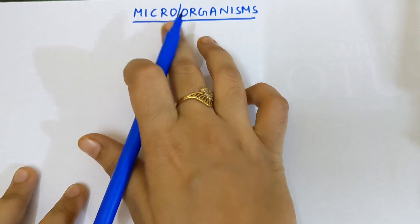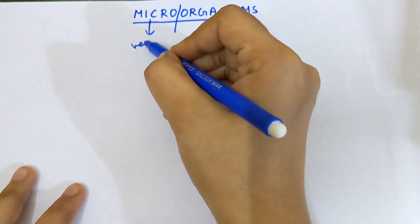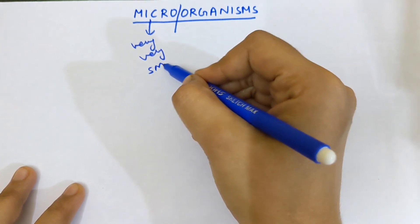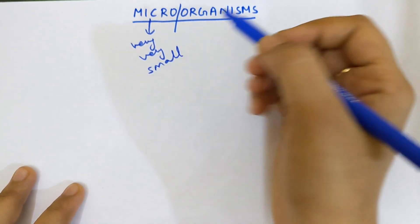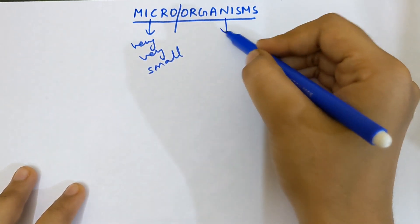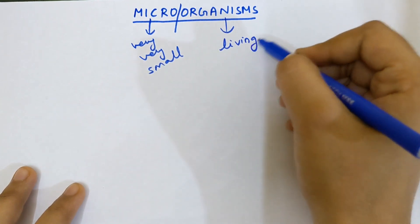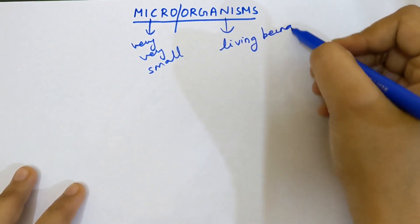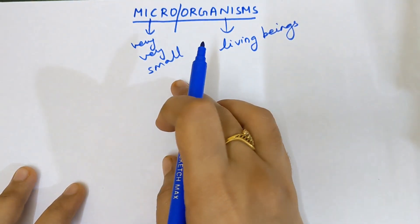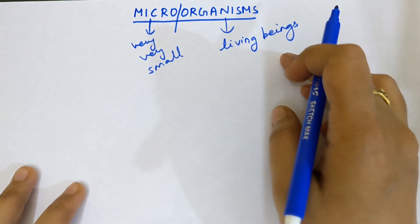Micro means something which is very very small. Organism means all the living beings. So micro means something which is very very small, and organism means living beings.